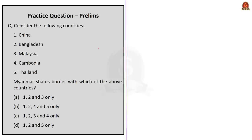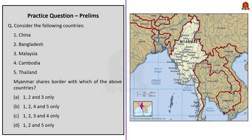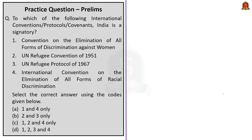The first practice question is a map-based question: Myanmar shares its border with which of the following countries — China, Bangladesh, Malaysia, Cambodia, and Thailand? Myanmar shares its land borders with Bangladesh, India, China, Laos, and Thailand. To its south and southwest are the Bay of Bengal and Andaman Sea. The correct answer is option D — 1, 2, and 5 only. Myanmar does not share borders with Malaysia or Cambodia. Malaysia shares its land border with Thailand, and Cambodia borders Thailand, Laos, and Vietnam.